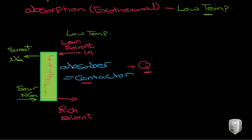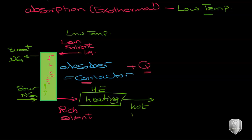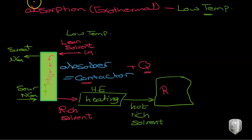After the process, you have a rich solvent at a slightly higher temperature. You need this rich solvent to be at higher temperature because you are going to regeneration. So here we are going to have heating by a heater or by heat exchange — a heat exchanger. After that you will have a hot rich solvent that will be fed into a regenerator. In the regenerator, the acid gases — hydrogen sulfide and carbon dioxide — are separated.